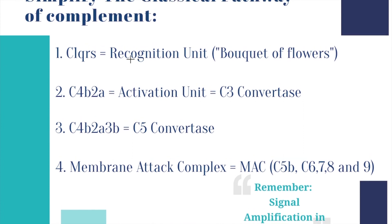All you really need to remember are these four steps: number one, C1QRS — recognition unit; number two, C4B2A — activation unit, also known as the C3 convertase; third step, C4B2A3B — the C5 convertase; and lastly, the membrane attack complex. Always remember that there is signal amplification in every step, which makes this pathway of complement highly effective. This was a challenge to memorize and understand again, but I really love this part of immunology. Our bodies are so cool to be able to do these kinds of things without us even knowing — it just does it.